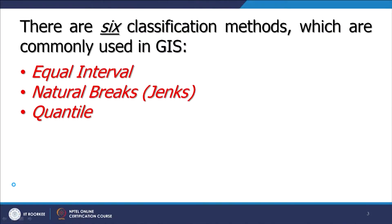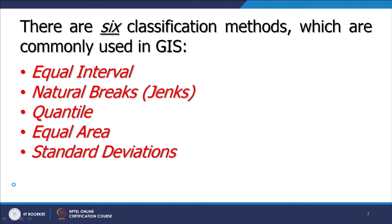The third type of classification is quantile, which involves equal area rather than having control over attribute values alone. We can involve area so that the number of pixels or cells will also be counted in this classification. The fifth one is standard deviation — a typical statistical technique. The most recently implemented in various GIS softwares is geometrical interval.